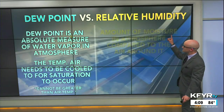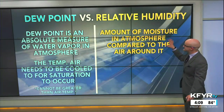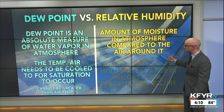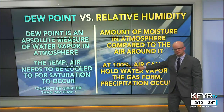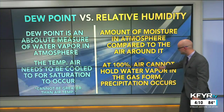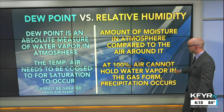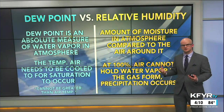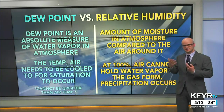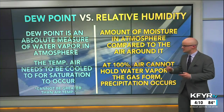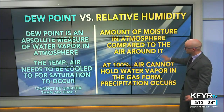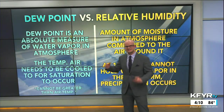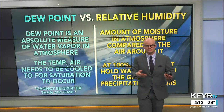Relative humidity is the amount of moisture in the atmosphere compared to the air around it. At 100% relative humidity, the air cannot hold water vapor in the gas form and precipitation occurs — that water vapor condenses, you get precipitation or fog. Relative humidity is expressed as a percentage, while dew point is expressed as a temperature, similar to air temperature.